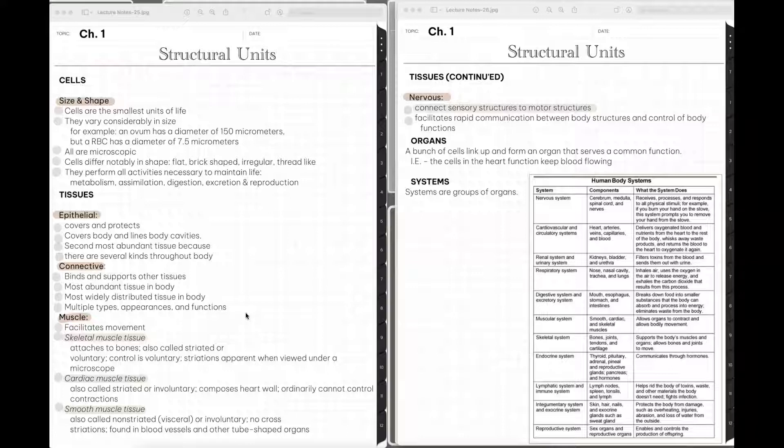So a bunch of cells put together make tissues, a bunch of tissues put together then make organs. And organs are basically where a bunch of cells and tissues link up and they create this structure that serves a common function. So for example, the cells in the heart function to keep the blood flowing. And so we're going to talk much more about body systems as we go through the course, but I wanted to put this chart in here for you to give you kind of a point of reference. So you are going to need to know what components or structures are within each system and what the functions of those are throughout this course.